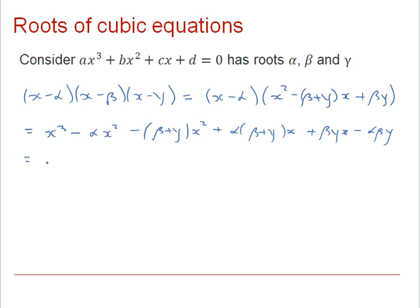When I gather up all those terms and consolidate the coefficients, that should give me x cubed minus alpha plus beta plus gamma, lots of x squared, plus alpha beta plus beta gamma plus gamma alpha times x minus alpha beta gamma, and that would equal zero for this equation, x cubed plus bx squared plus cx plus d equals zero.